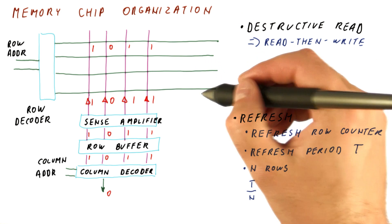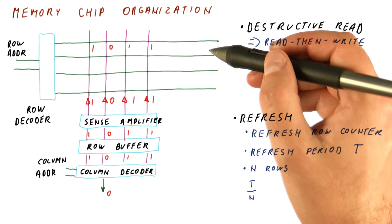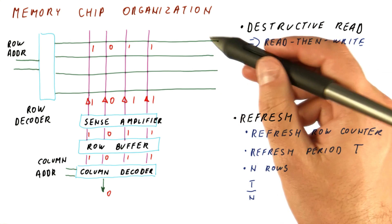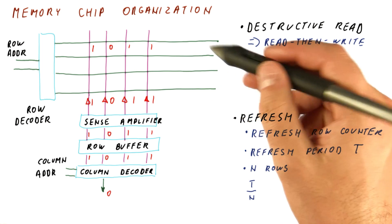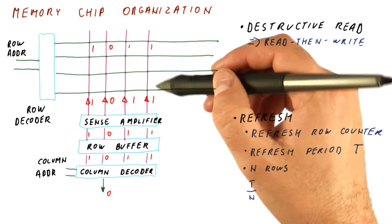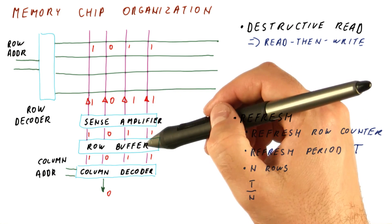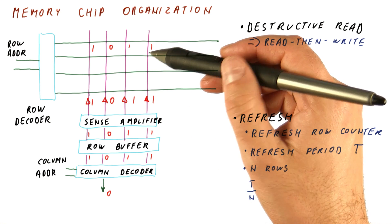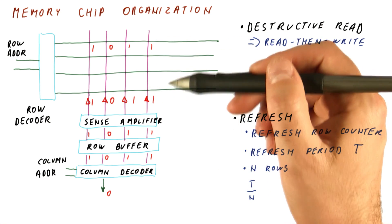Modern DRAMs have a lot of rows and the refresh period is well under a second, so we are actually seeing a lot of refreshes happen every second. This is not something that happens occasionally — it significantly interferes with when we can read and write memory. Because while a refresh is going on, we cannot do a useful read, since the row decoder, sense amps, and row buffer are used by the refresh operation, which is reading a row we didn't need and writing it back. Meanwhile, we have to sit and wait with a real read until that gets done.